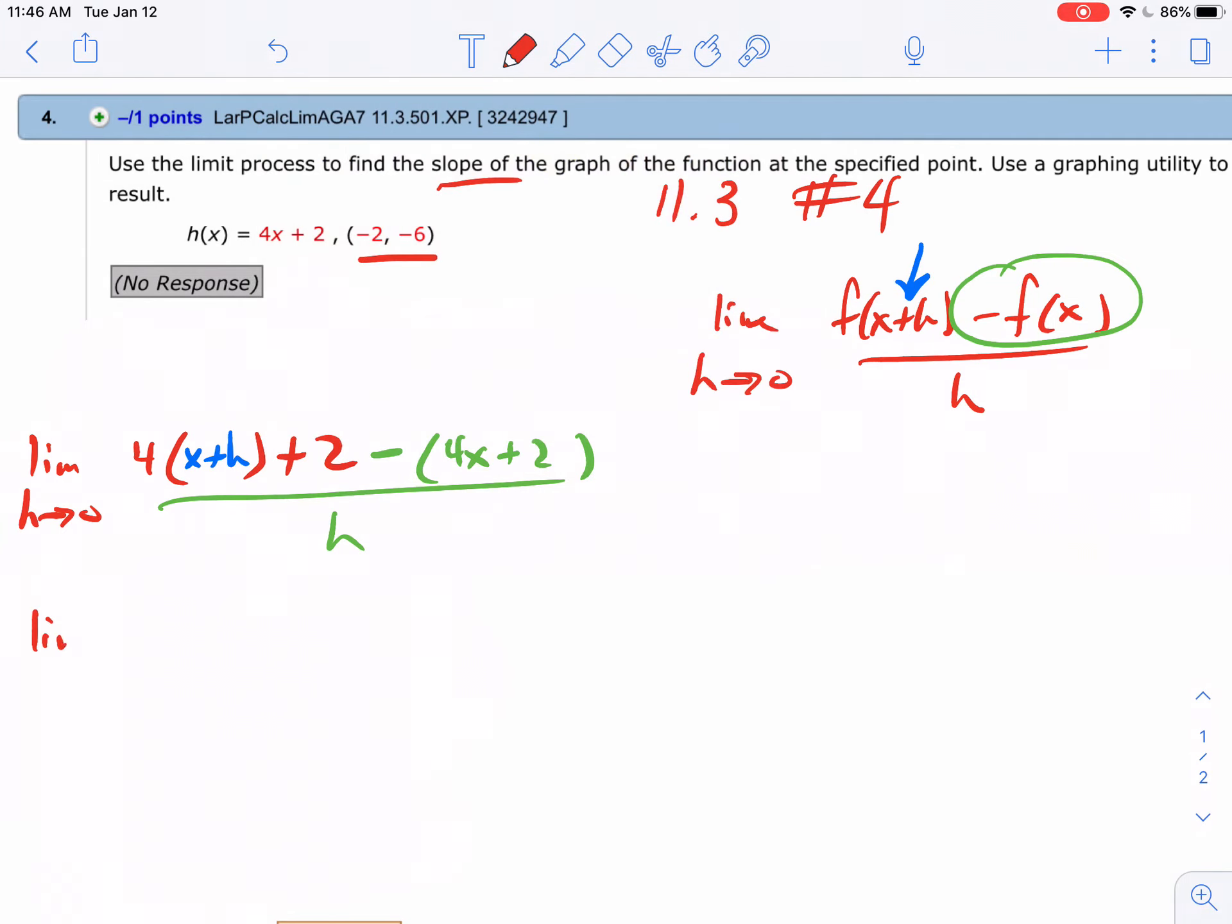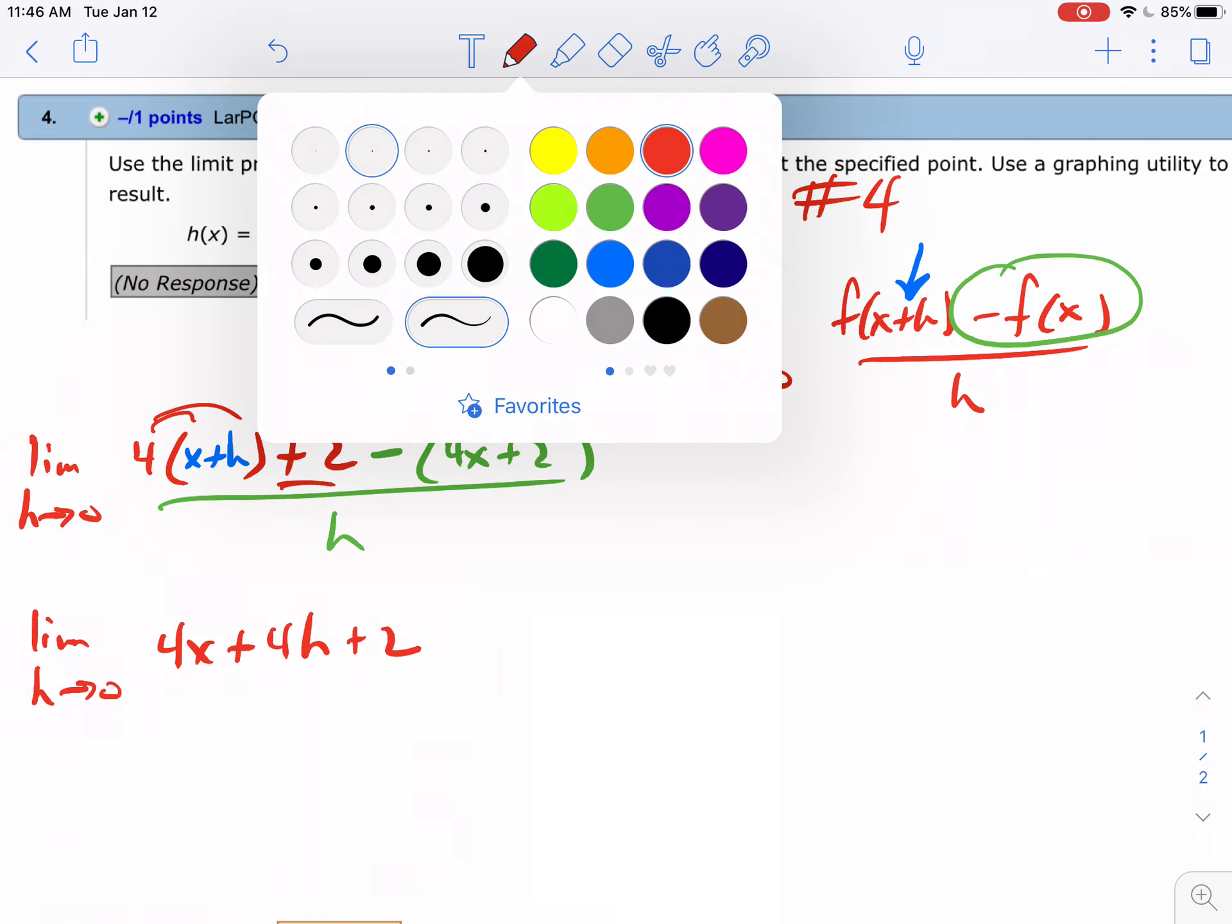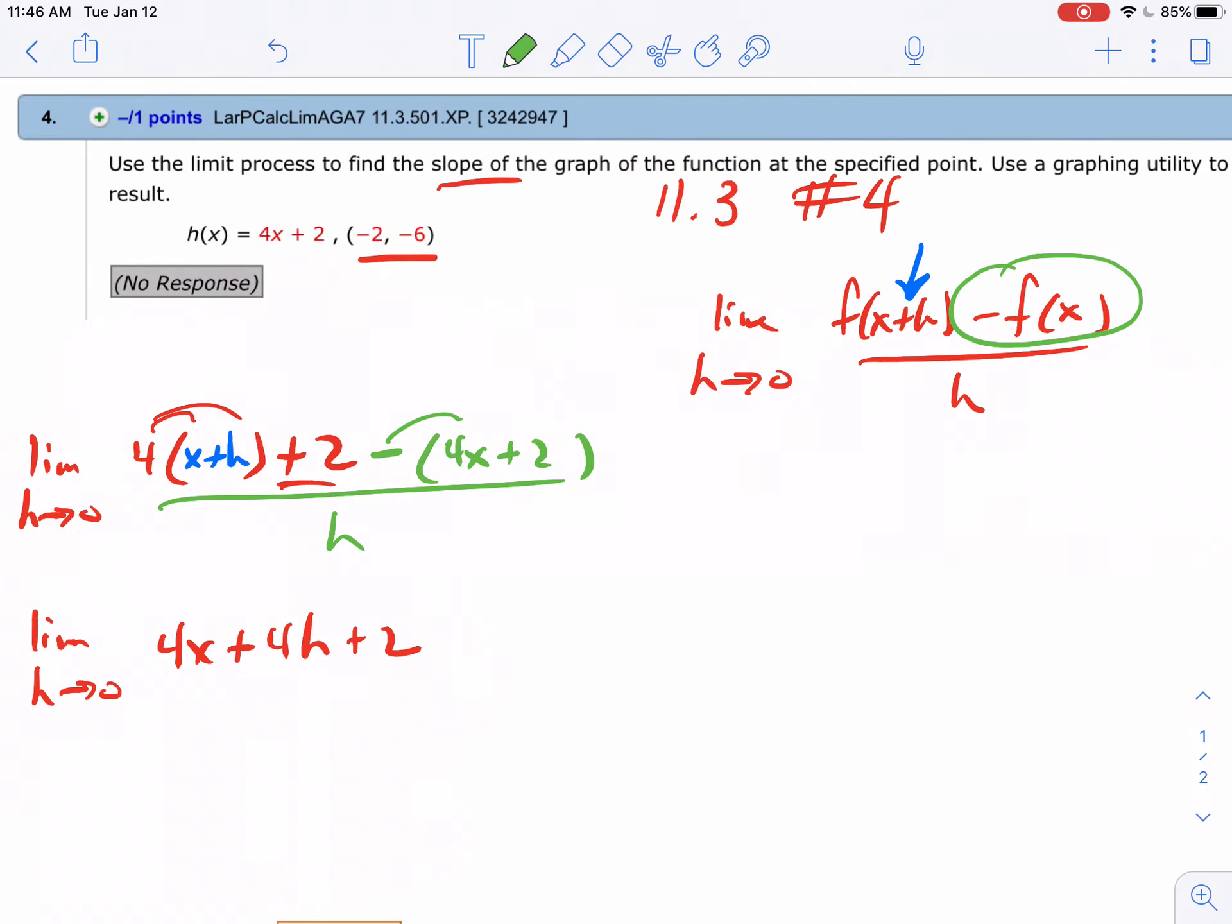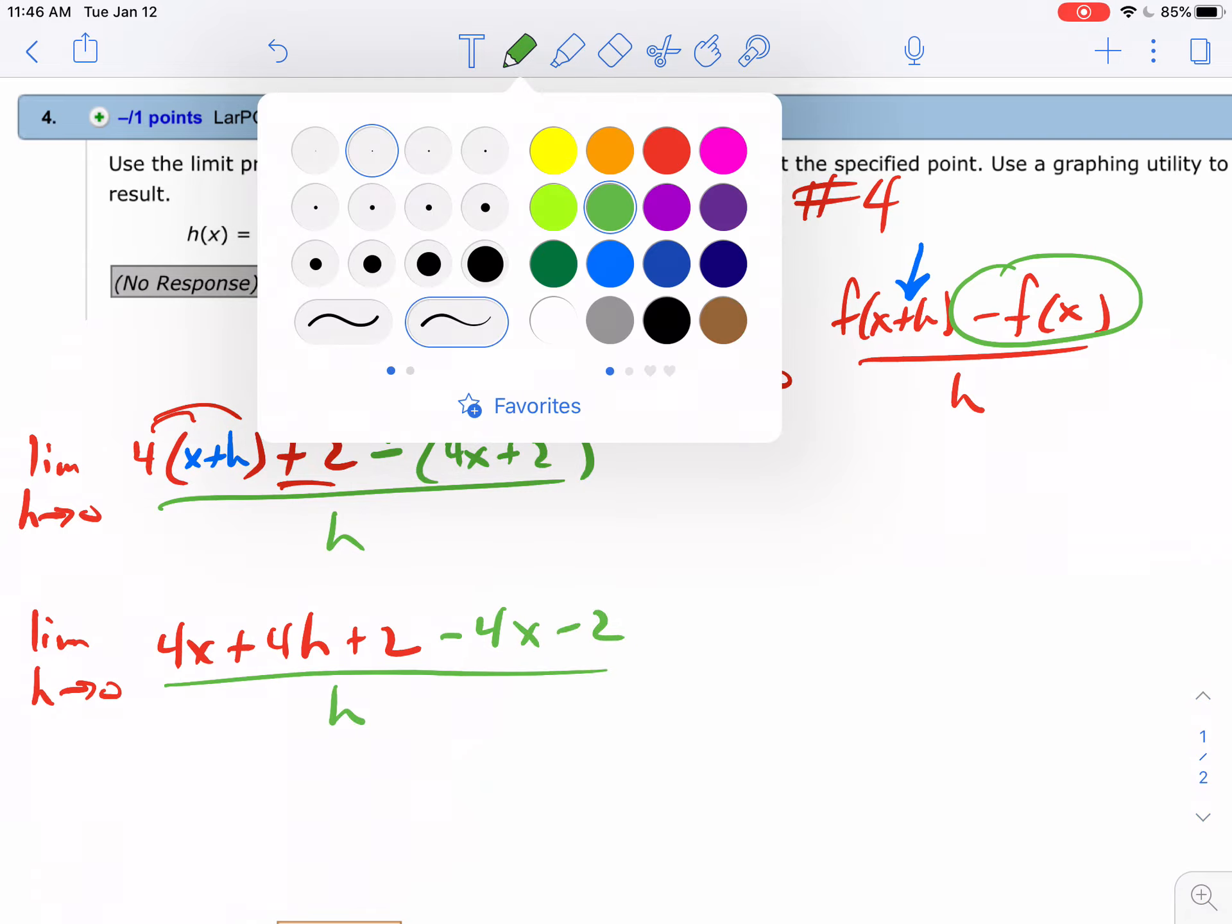This is the limit as h goes to zero. Distribute the 4, so you end up with 4x plus 4h. Don't forget about this plus 2. Then for the green stuff, distribute the negative sign, so that's negative 4x minus 2, all over h.